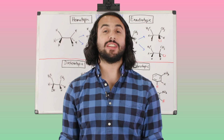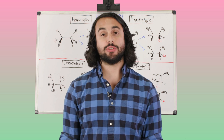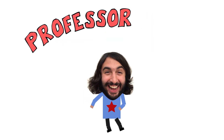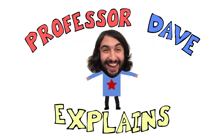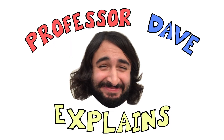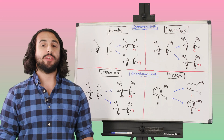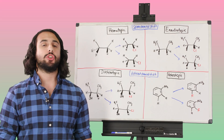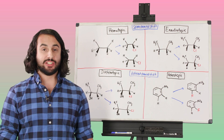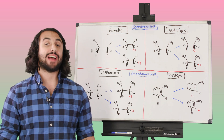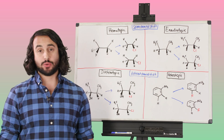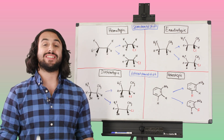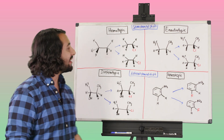It's Professor Dave, let's talk about different types of protons. In chemistry, and in particular in the context of NMR spectroscopy, we will often hear these terms: homotopic, enantiotopic, diastereotopic, and heterotopic. We want to understand what they mean, so let's go over the definitions of these terms.